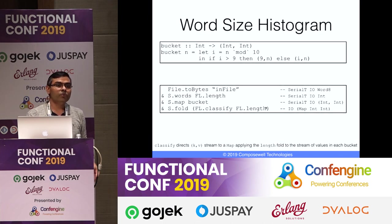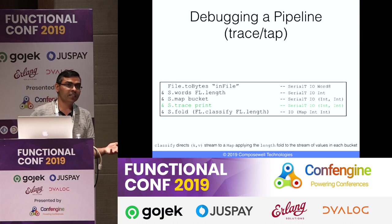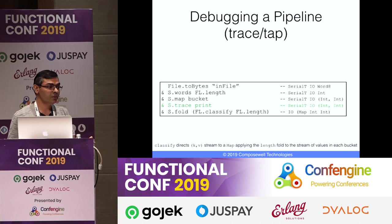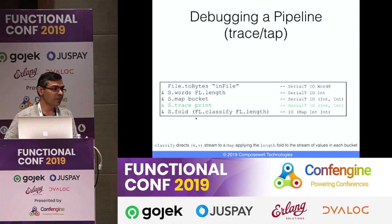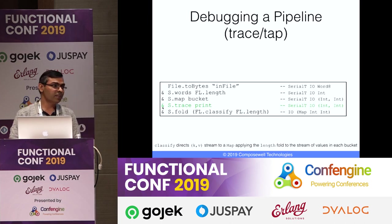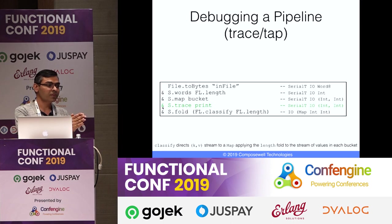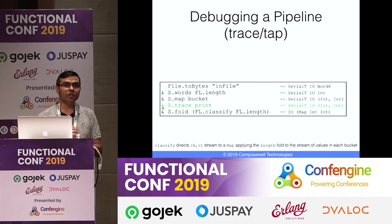To debug a pipeline, there are trace and tap combinators. You can use S.trace print within a pipeline to print or log to a file mid-stream. The ampersand (&) operator is like the shell pipe — the stream from the first stage is fed as argument to the next stage, opposite of the dollar operator.